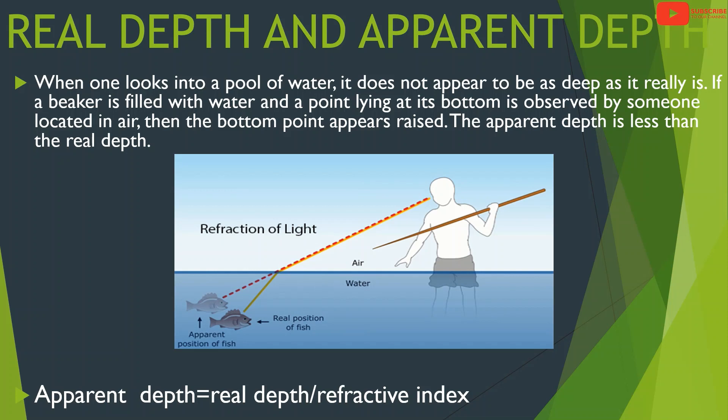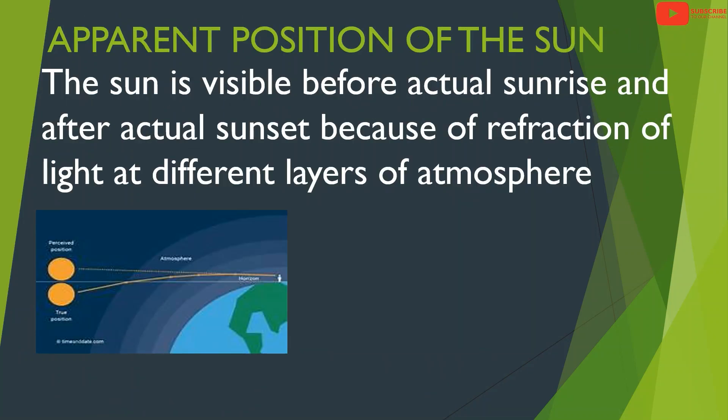This is the apparent position of the sun. The sun is visible before actual sunrise and after actual sunset because of refraction of light at different layers of the atmosphere.